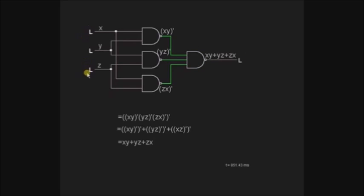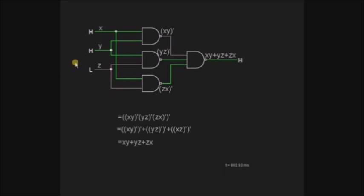Here all the inputs are low, so the majority logic level is low and the output is low. Now I am changing the first input high — the output remains low since the remaining two inputs are low, meaning two out of three inputs are low and one is high, so the majority is low. If I change the second input also high, then two inputs are high and one is low — high is the majority logic, so the output is high. If I change the third input also high, the majority inputs are high, so the output is high.